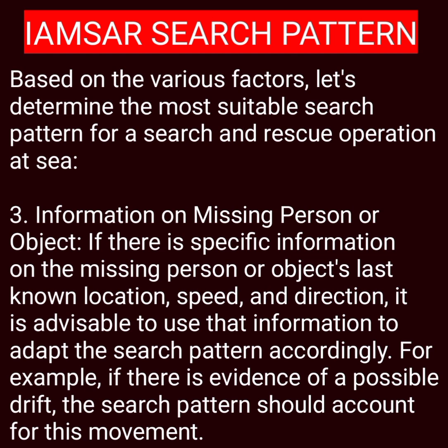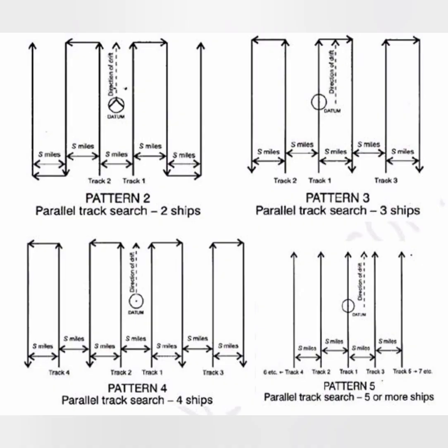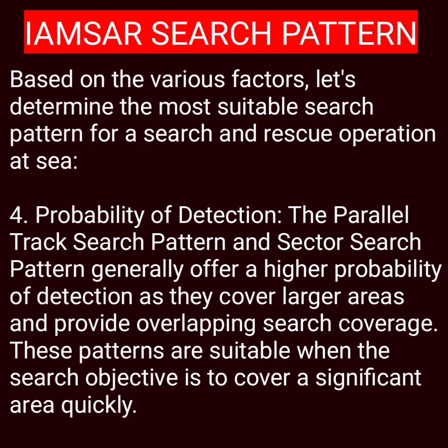The third factor is information on the missing person or object. If there is specific information on the missing person or object's last known location, speed, and direction, it is advisable to use that information to adapt the search pattern accordingly. For example, if there is evidence of possible drift, the search pattern should account for this movement. In cases where the person has fallen overboard and that information is not available, we have to trace back to the point where the person was last seen, thus increasing the search area. In such cases, the parallel track search pattern could be most efficient.